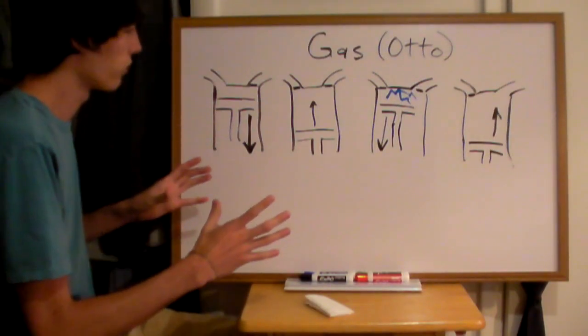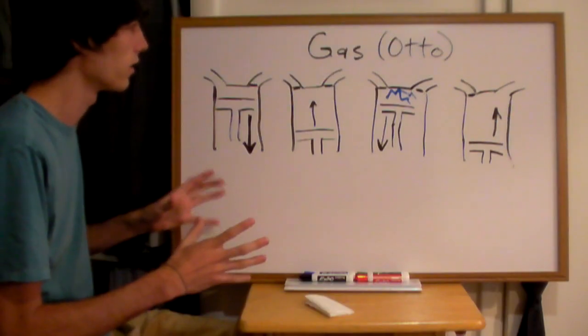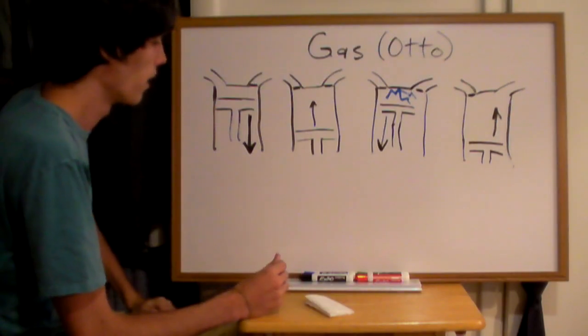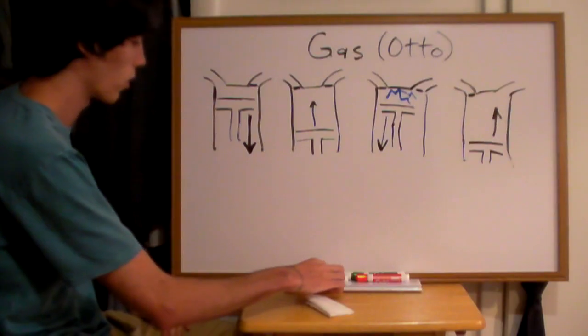So this which I've drawn here is the gasoline or Otto cycle as it's commonly referred to. And here's how it works.